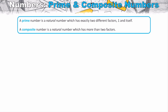A factor is something that divides into a number perfectly. Take the number seven — seven is a prime number because it can be divided by exactly two numbers: itself (seven) and one. Those are its only two factors, and because it is divided exactly by one and itself, we call it a prime number.